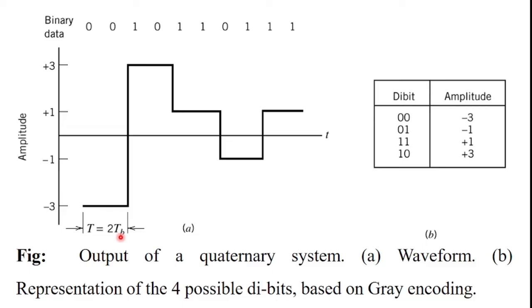The symbol duration T is called the signaling rate of the system, which is represented as symbols per second, that is baud. In case of M-ary PAM system, one baud equals log_2(M) bits per second. The symbol rate is 1/(2T_b) since each symbol consists of two bits.